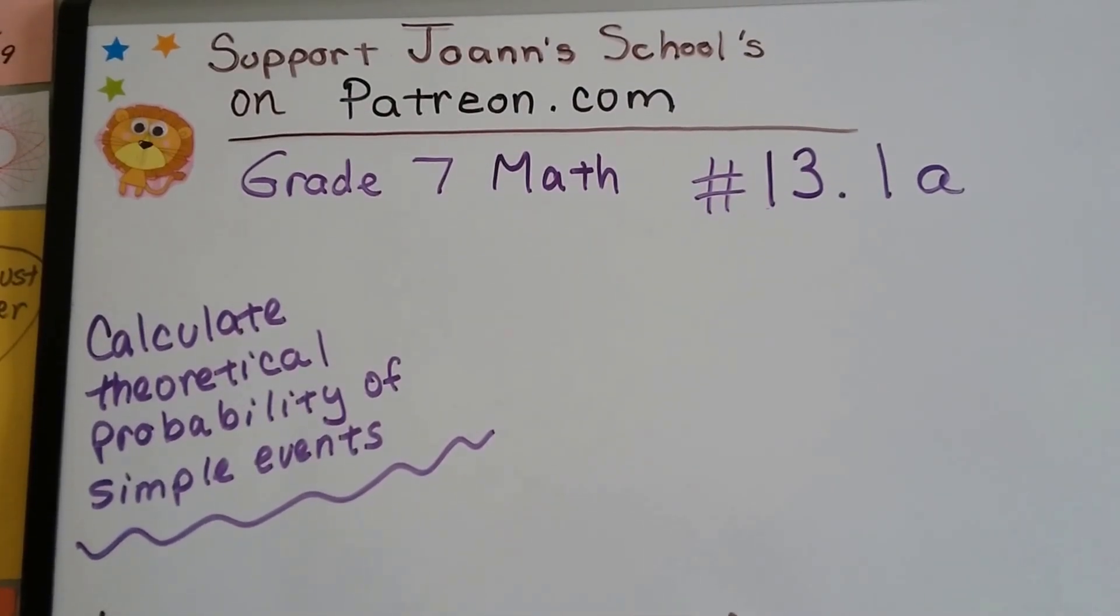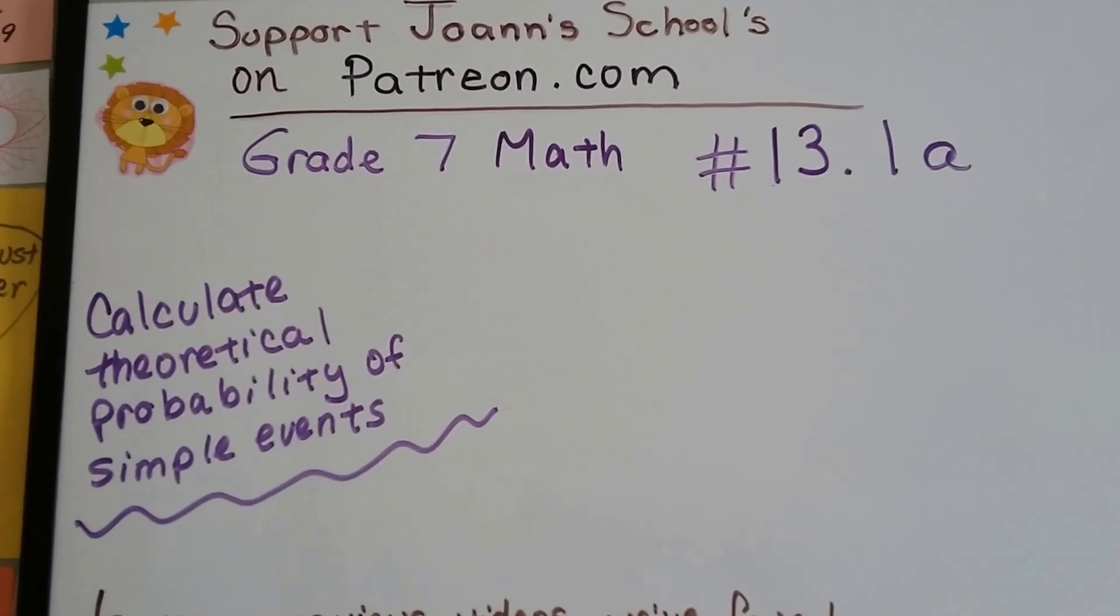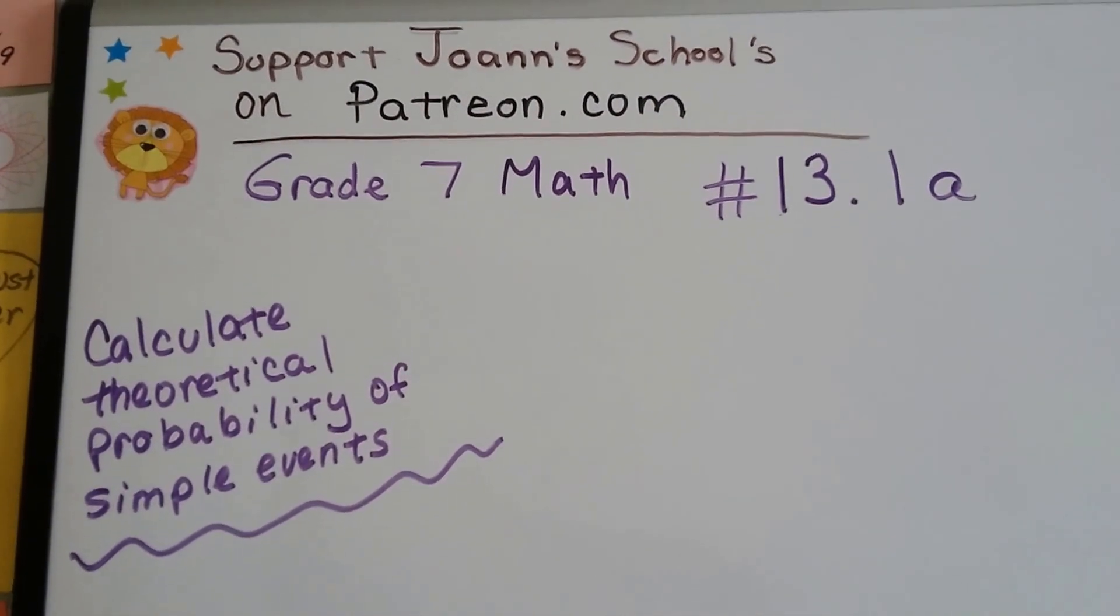Grade 7 math number 13.1a, Calculate Theoretical Probability of Simple Events.